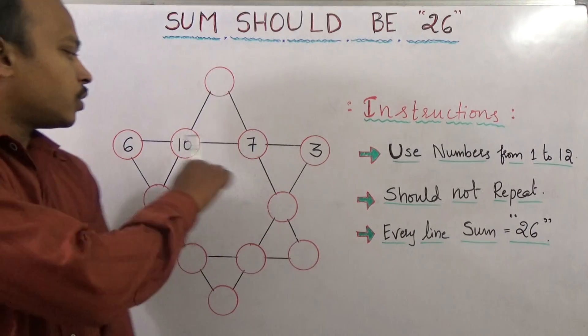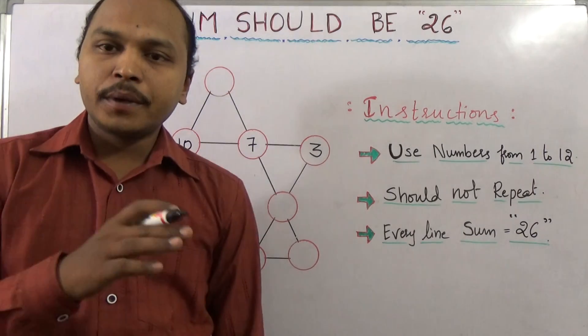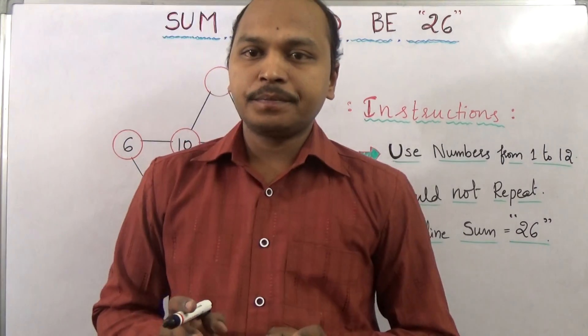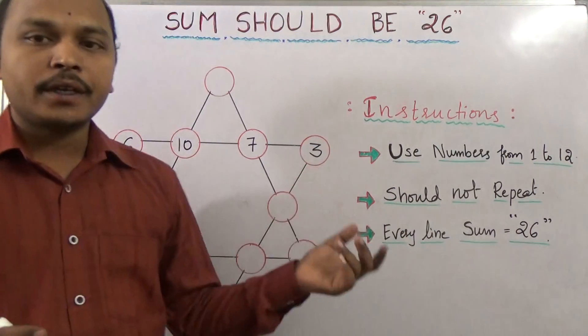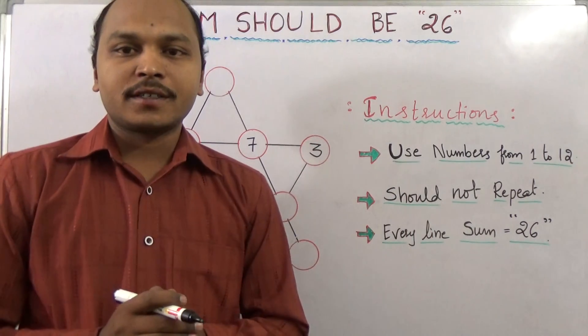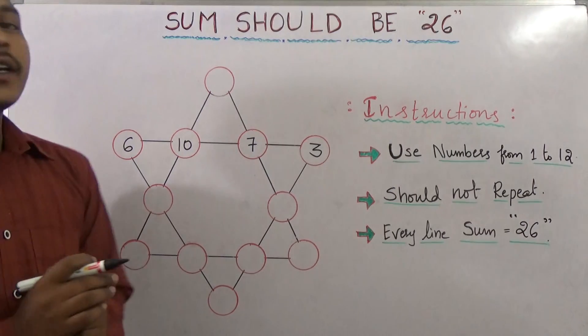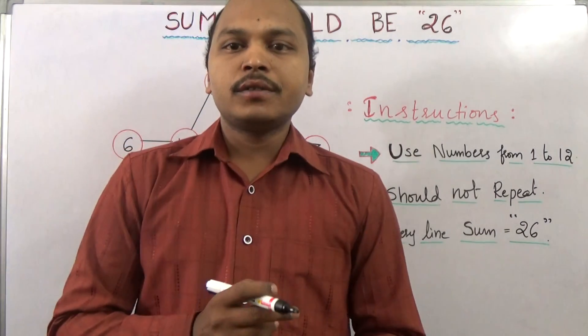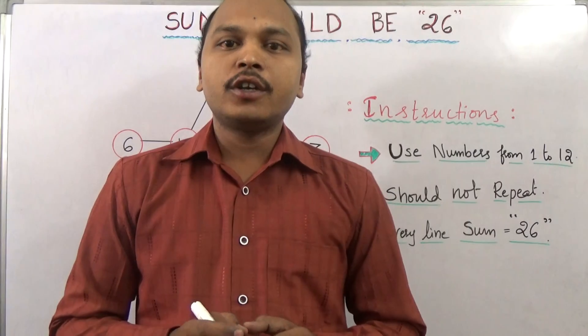Now, these four numbers, you should not repeat in any other circle. So without repeating, the sum should be 26. I hope you understood this question well. Try it.